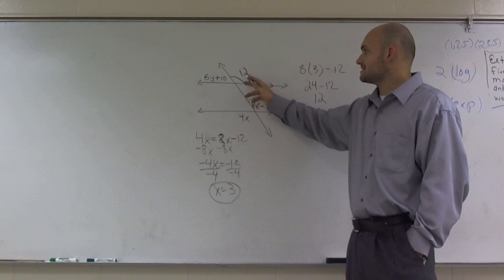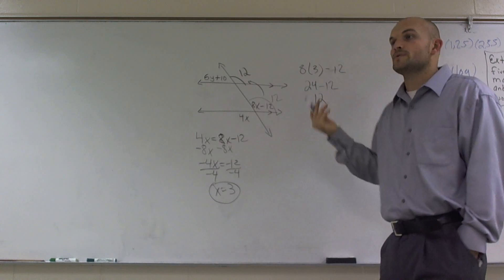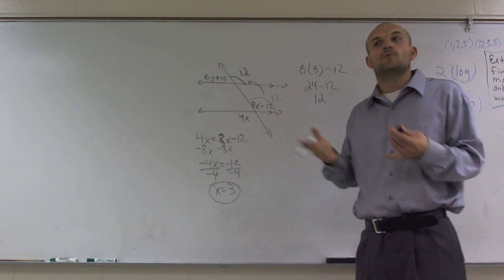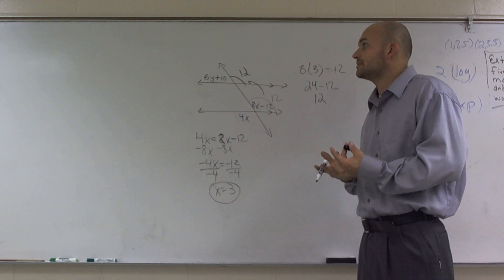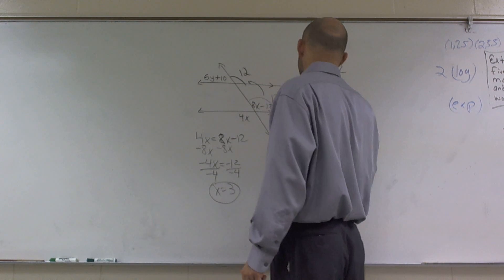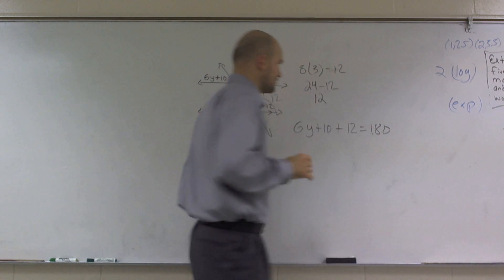And since this is equal to 12 and that one's equal to 12, I have these two angles which are on a straight line, which we call a straight angle. So whenever two angles make up a straight line or a straight angle, we know those two measures add up to give us 180 degrees.